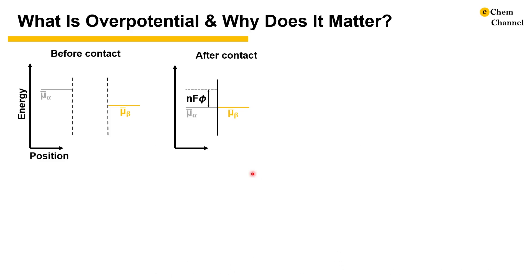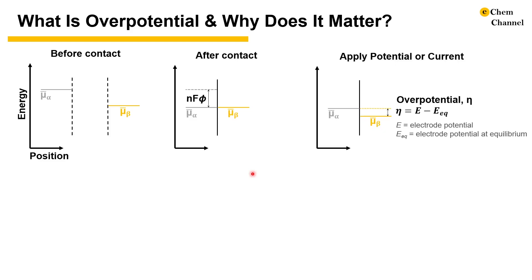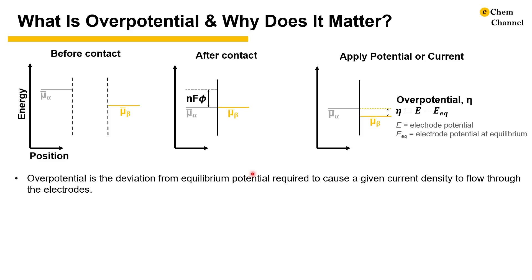As we introduced in the previous episode, when two phases contact, an interfacial electric field builds up that equalizes the electrochemical potentials in the two phases. When we apply a potential or a current to one phase, we move the electrical potential away from equilibrium. Overpotential is the difference between the electrical potential and the equilibrium potential. More meaningfully, it is the deviation from the equilibrium potential required to cause a given current density to flow through the electrodes.